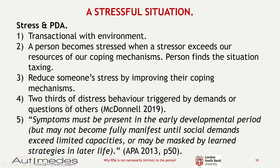Our understanding of demand avoidance as written within the DSM-5 autism criteria is that avoidance behaviours and stress are transactional. This is the quote for Criterion C of the DSM-5 autism criteria — basically the one which suggests autism features need to be from early infancy: 'Symptoms must be present in the early developmental period, but may not become fully manifest until social demands exceed limited capacities, or may be masked by learned strategies in later life.' It is literally saying autism features may not become apparent until social demands from situations exceed the person's capacities.